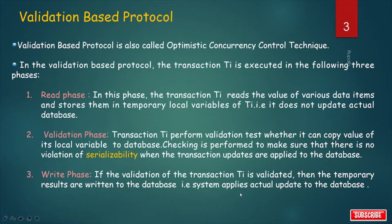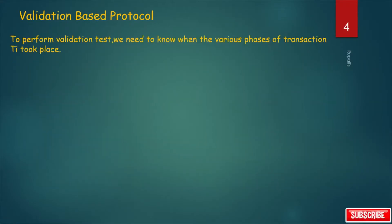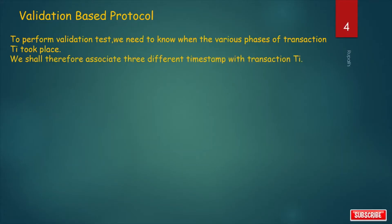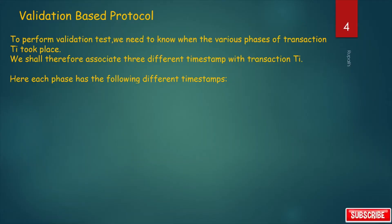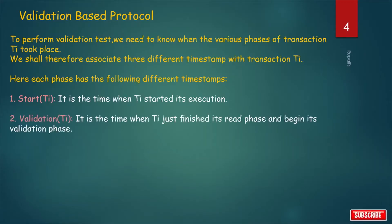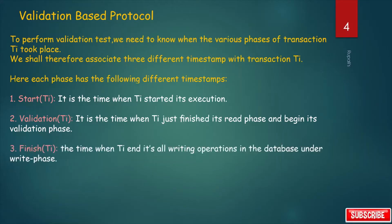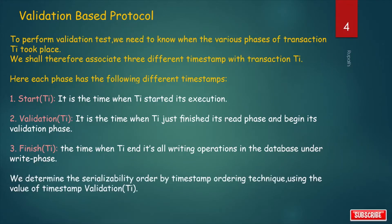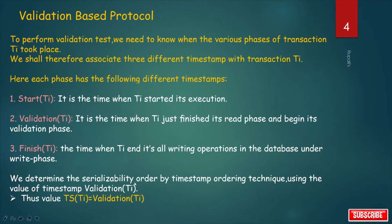To perform the validation test, we need to know when the various phases of transaction TI took place. We therefore associate three different timestamps with transaction TI. First is start(TI): the time when TI started its execution. Second is validation(TI): the time when TI just finished its read phase and began its validation phase. Third is finish(TI): the time when TI ends all writing operations in the database under the write phase. We determine the serializability order by timestamp ordering techniques using the value of validation(TI). So we can say that validation(TI) is actually the timestamp of TI.